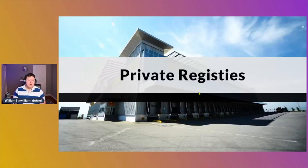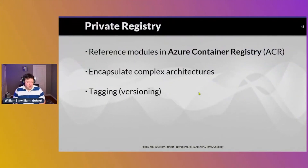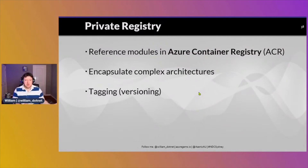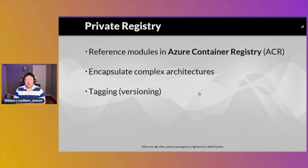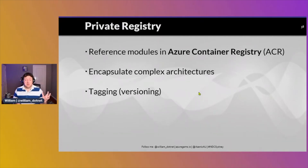The next awesome feature is private registries. In our Bicep files we can reuse other Bicep files because each Bicep file essentially is a module, and these modules can go into a registry. This lets us encapsulate complicated applications or sets of resources and reuse them much more easily. We use tagging for versioning, just like Azure Container Registry for container images — it uses the open container image format, so we can store Bicep module files in ACR.